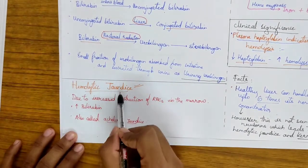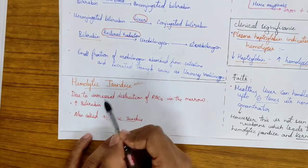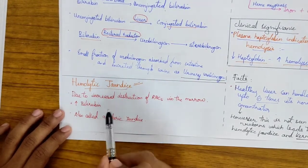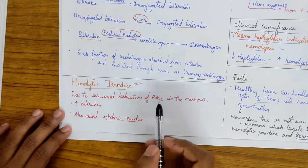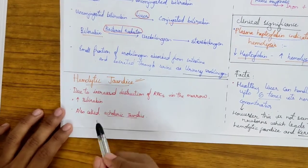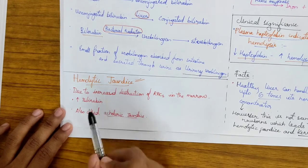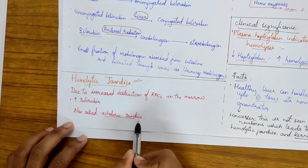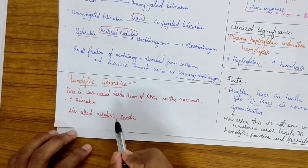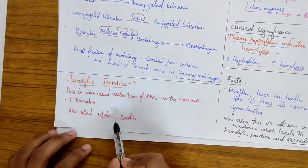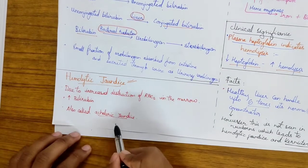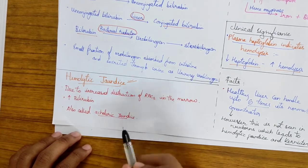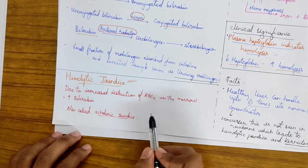Now, talking about hemolytic jaundice, first of all this topic is very important. In hemolytic jaundice, there is increased destruction of RBCs in the marrow. Due to this, the bilirubin is increased in the blood. Hemolytic jaundice is also called acholuric jaundice because bile in this case does not escape into the urine. Though urinary urobilinogen is seen in the urine and stercobilinogen is increased in the stools.